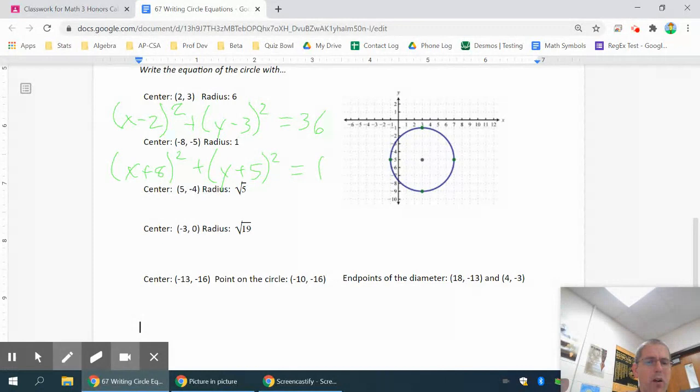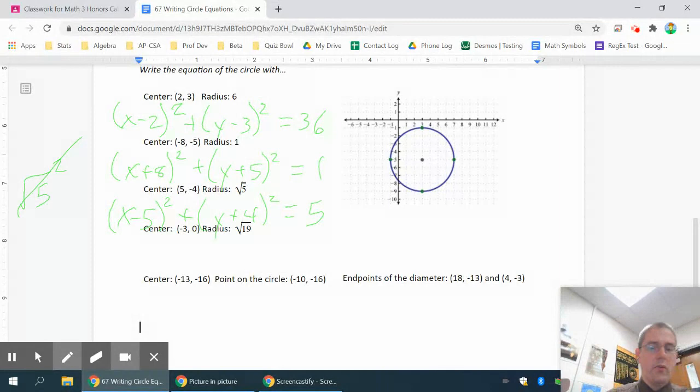Go ahead and pause the video. Try the next couple on your own, and then we'll go over them very quickly. On the next problem, that would be x minus 5, switching the sign squared, plus y plus 4 squared, switch the sign again, equals square root of 5 squared is 5, because when I have a square root and I square it, it just cancels out the square and the square root, leaving me a 5.